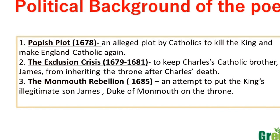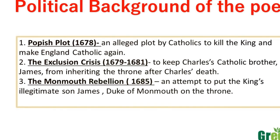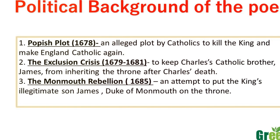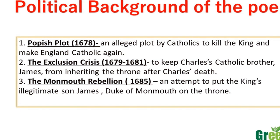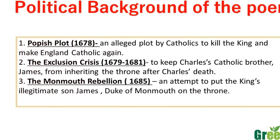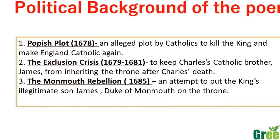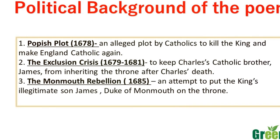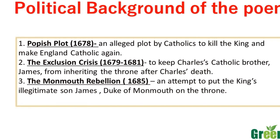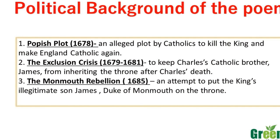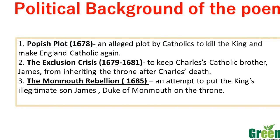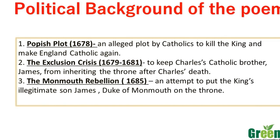The third political event is the Monmouth Rebellion of 1685, an attempt to put the King's illegitimate son James, Duke of Monmouth, on the throne. All three of these political twists and turns are discussed in the poem. The major political figure cited as the reason behind these crises is the Earl of Shaftesbury and his Catholic supporters.